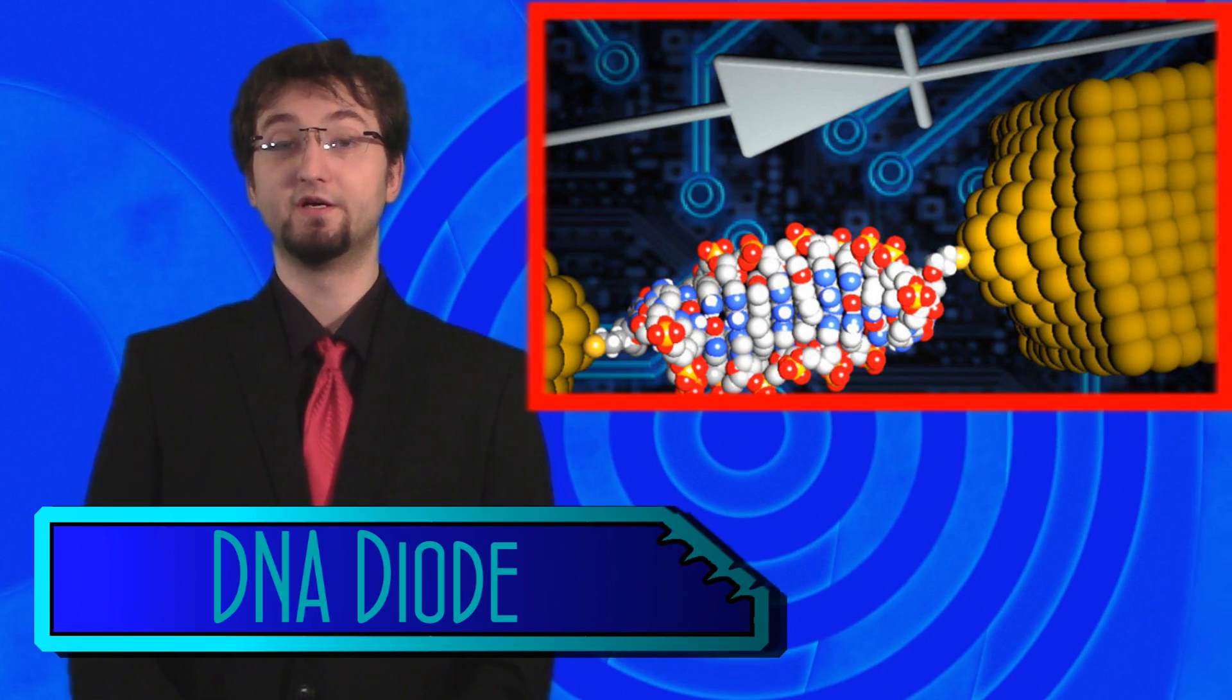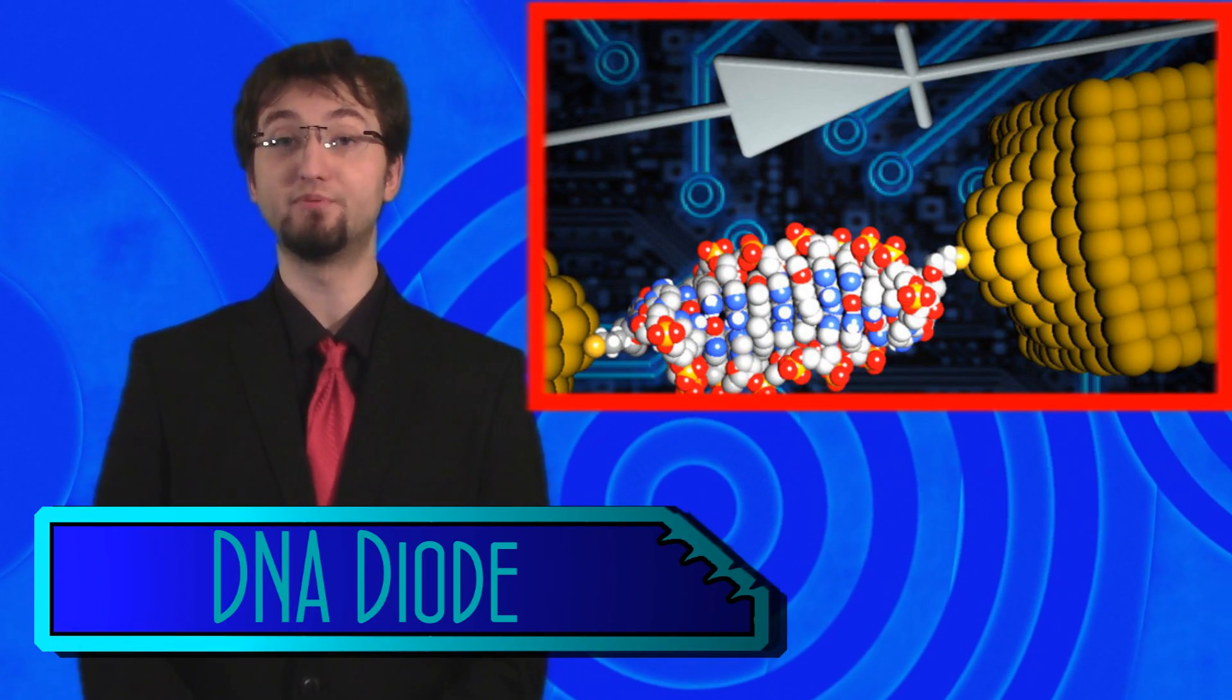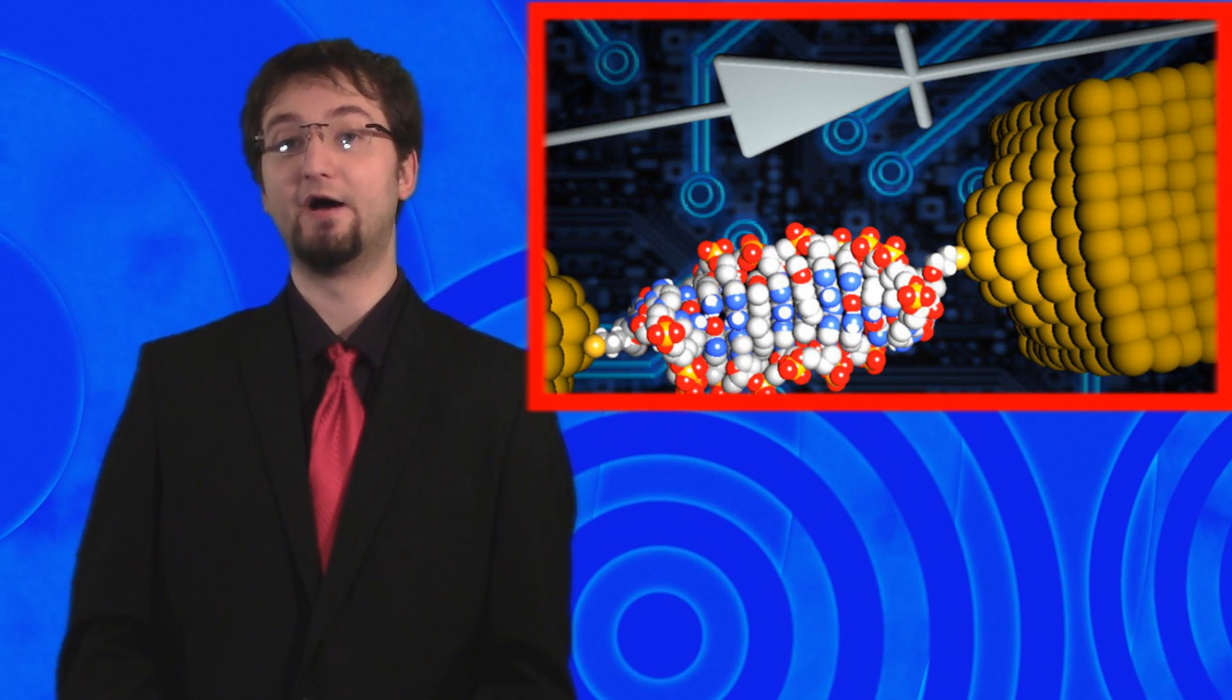The University of Georgia has created a nearly perfect diode. Diodes are crucial in electronics and allow the flow of electricity in one direction while constricting it in the other. In this new discovery, scientists have used an 11-base-pair-long strand of DNA as a diode with extreme efficiency.